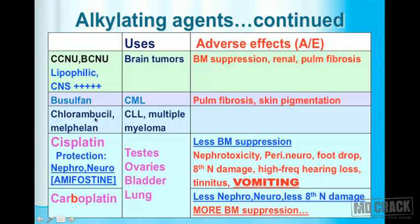Cisplatin and carboplatin both produce nephrotoxicity, neurotoxicity, and bone marrow suppression. The nephrotoxicity and neurotoxicity produced by cisplatin can be prevented by the use of an agent called amifostine. Cisplatin and carboplatin are commonly used for tumors of the testes and ovaries, carcinoma of the bladder, and carcinoma of the lung.